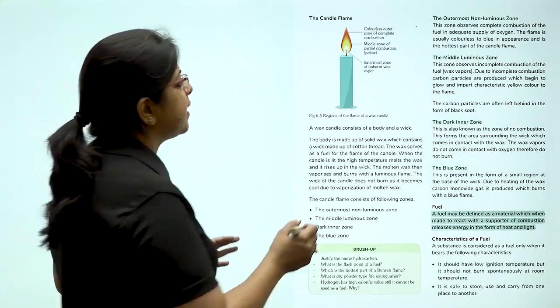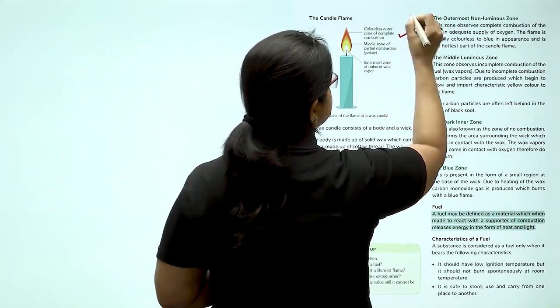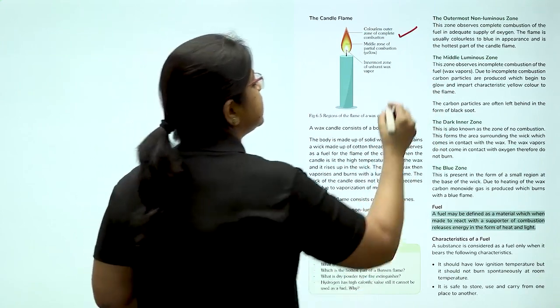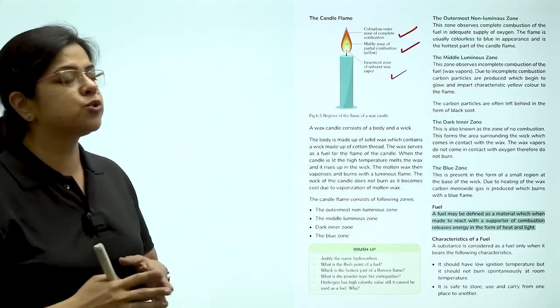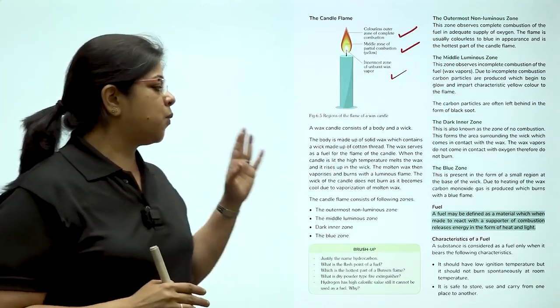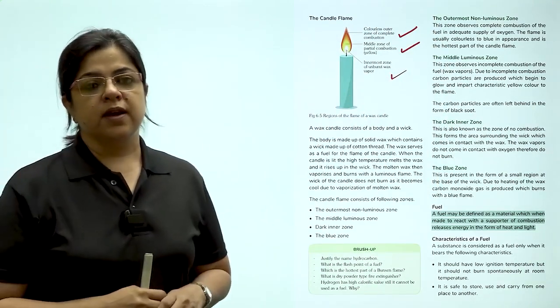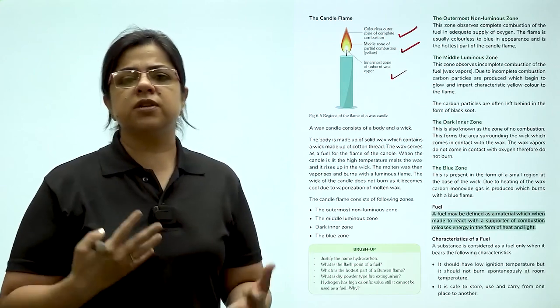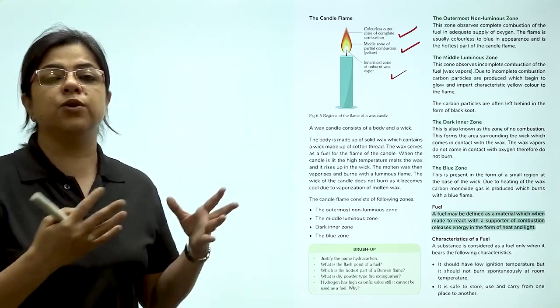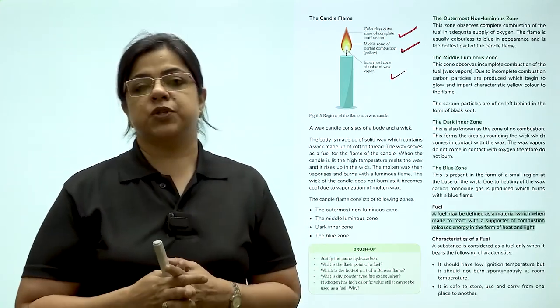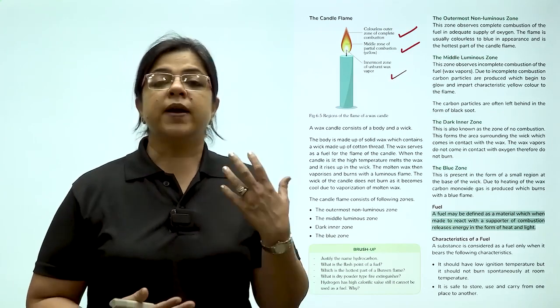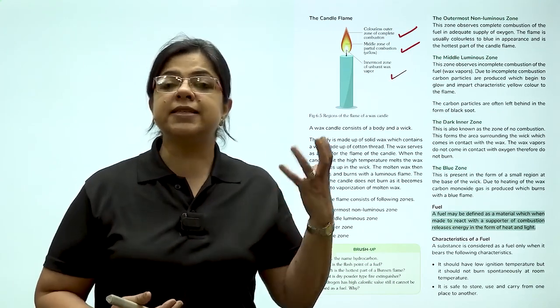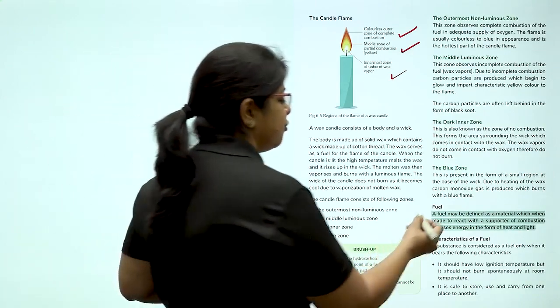So therefore, there is the colorless outer zone of complete combustion. There is a middle zone of partial combustion. And there is an innermost zone of unburnt wax vapor. Now, we are talking about combustion again and again. We know that when you heat a substance, it catches fire and it produces heat and light. So, any substance that releases heat is a fuel.